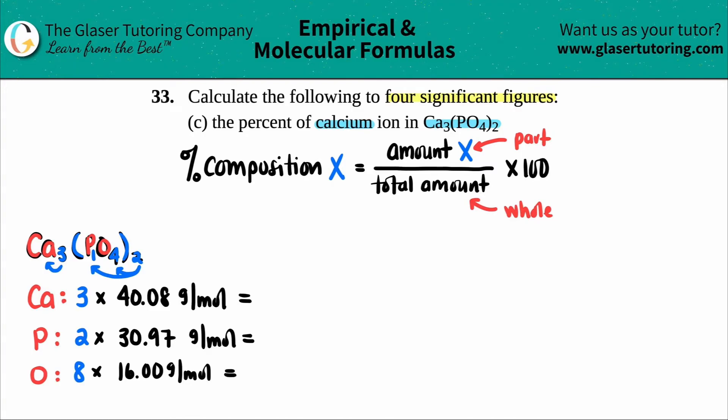So 3 times 40.08 is 120.24 and that's also gram per mole of the calcium. 2 times 30.97 is 61.94 and that's the gram per mole of the total of the phosphorus. And then 8 times 16 is 128. I'm just going to add the two zeros and that's the gram per mole total for the oxygen.